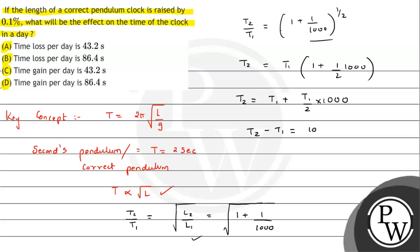From here we can say T1 is 2 seconds, so T2 - T1 equals 1/1000. Here we can see time period increase - the time period is increasing.